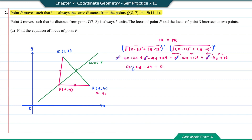For this equation, we can simplify by dividing every term by 6. So the equation becomes x minus y minus 4 equal to 0.